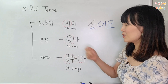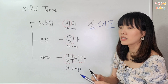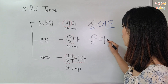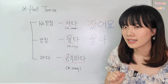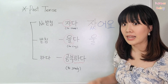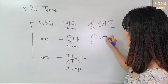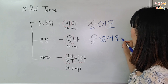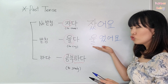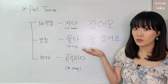Let's move on to cry. Write 울다, then delete 다 — it doesn't have any meaning. Then put 었어요. It becomes 울었어요, which means cried. 울었어요.